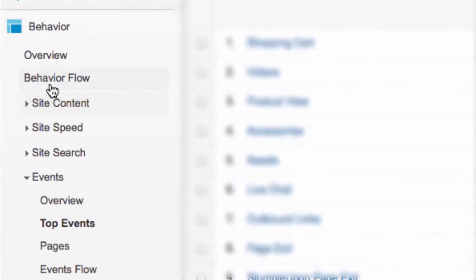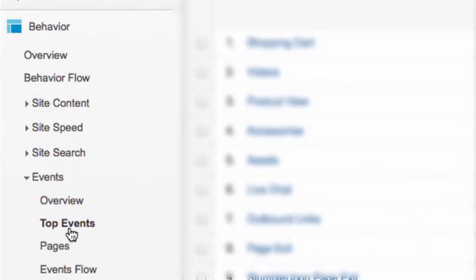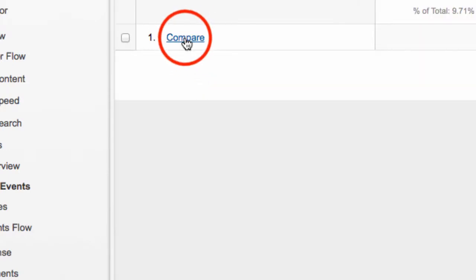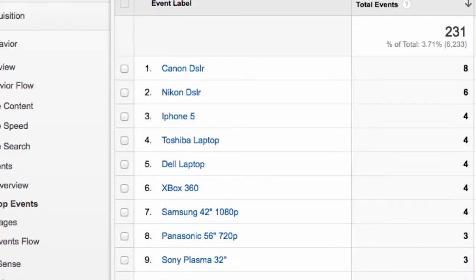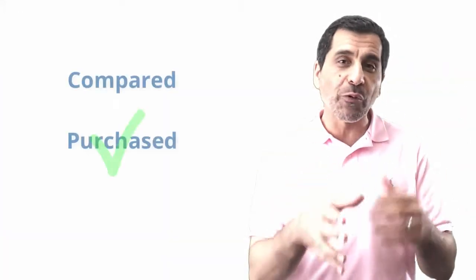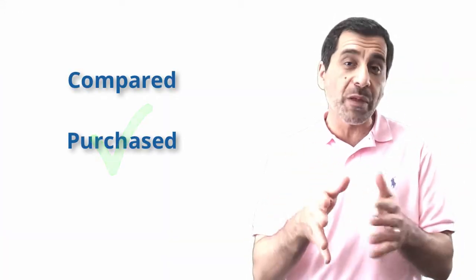You can go to the events reports and see which products are compared and which products are not being compared. Equipped with these comparison data elements or events, we can then create a segment on people or on products that were purchased and also were compared, or products that were compared and not purchased. You can see correlation between these two sets of data.